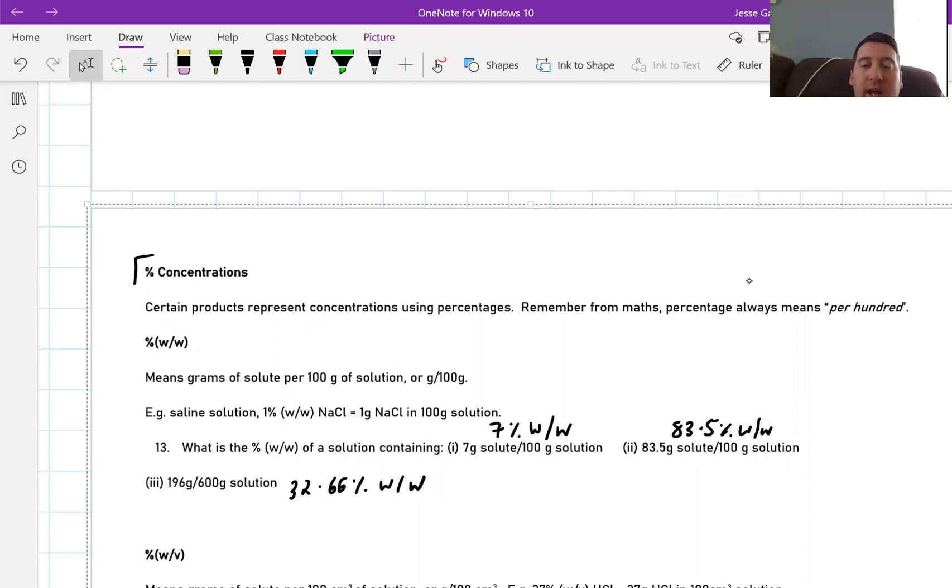I think all of those are pretty easy. Here are the answers you should have got. The first one is 7 percent, the second is 83.5 percent weight per weight, and the third is 32.66 percent weight per weight. If you're not getting these right, I suggest you go back and see how I did it. I think they're pretty straightforward and I don't want to waste your time talking too much about them.